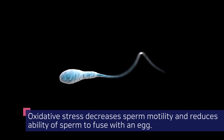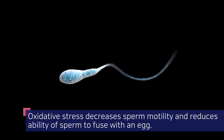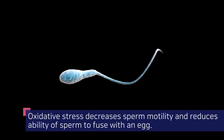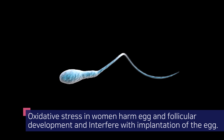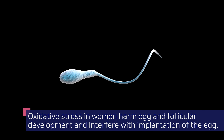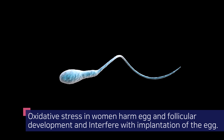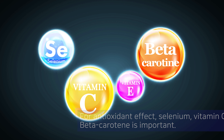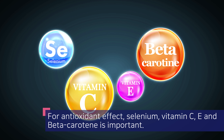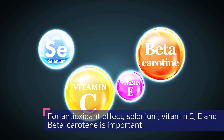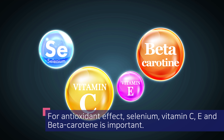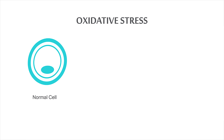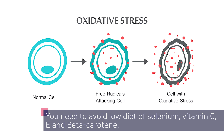Six: free radicals and oxidative stress affect both men's and women's fertility. Oxidative stress decreases sperm motility and reduces the ability of sperm to fuse with an egg. In women, oxidative stress harms egg and follicular development and interferes with implantation. For antioxidant effect, selenium and vitamins C, E, and beta-carotene are important. You need to avoid a low diet of selenium, vitamin C, E, and beta-carotene.